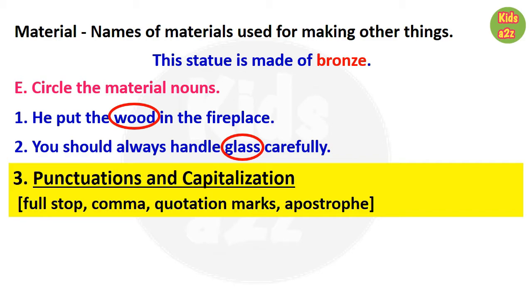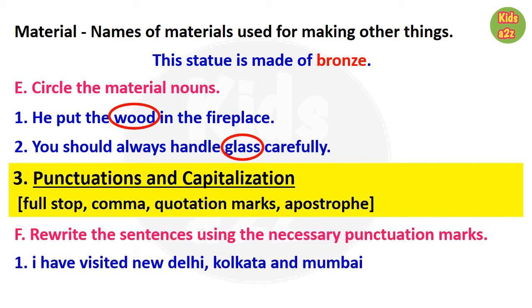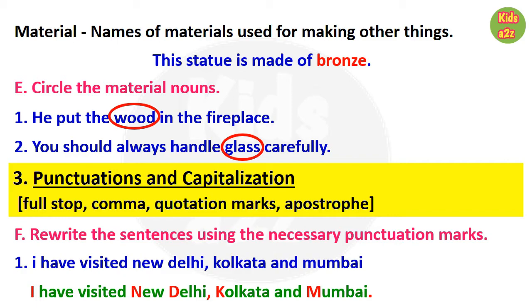The next topic is punctuation and capitalization. Here they will learn the uses of full stop, comma, quotation marks, and apostrophe. They will face questions like rewriting sentences using necessary punctuation marks. For the first example, they need to start with a capital letter. 'I' should always be capital. 'New Delhi,' 'Kolkata,' and 'Mumbai' need capital letters, a comma between 'New Delhi' and 'Kolkata,' and a full stop at the end.